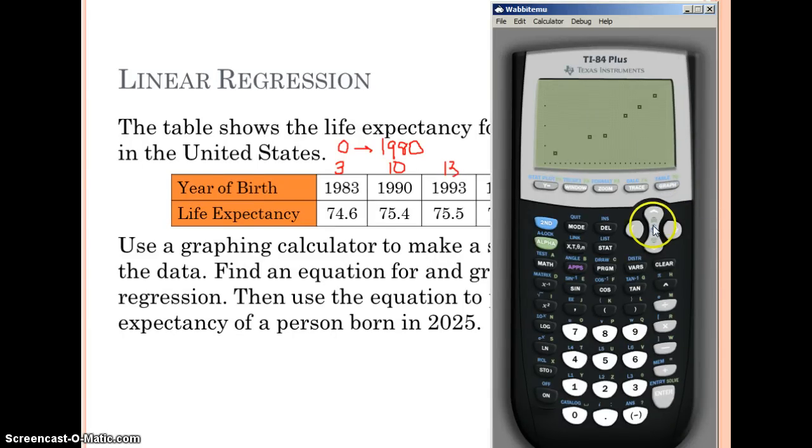When you type yours in, go zoom 6. You might have a window where you don't see any of your points because it's not in that range. We have a handy tool where we can go to zoom, go all the way down to number 9 zoom stat, press enter, and it'll make a window that fits all of your points. Now we can see our points lined up in a pretty straight line for the most part.